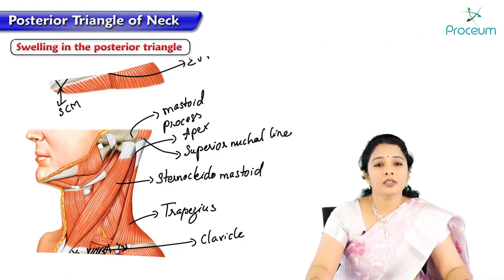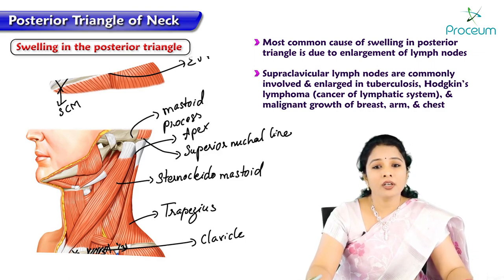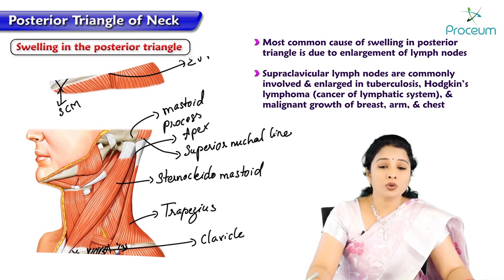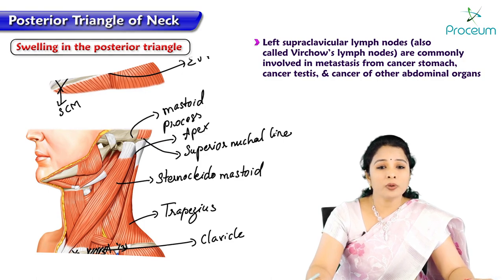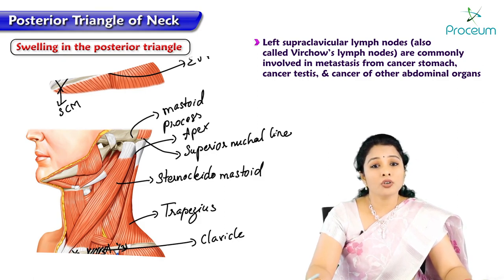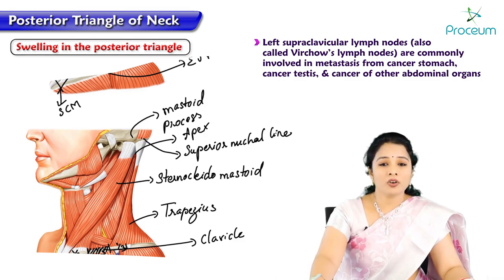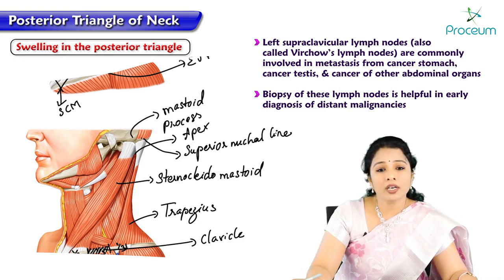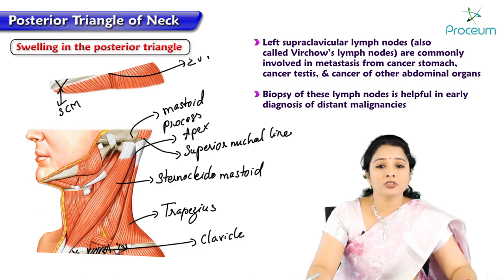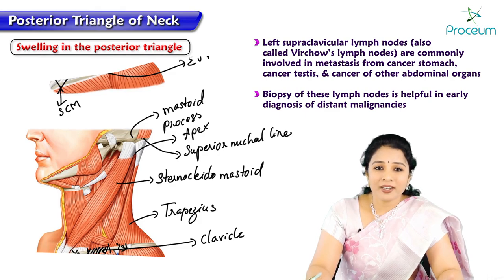The most common cause of swelling in the posterior triangle is enlargement of lymph nodes. The supraclavicular lymph nodes are commonly involved in tuberculosis, Hodgkin's lymphoma, and malignant growth of the breast, arm, and chest. The left supraclavicular lymph nodes are called Virchow's lymph nodes, commonly involved in metastasis from cancer of the stomach, testes, and other abdominal organs. Biopsy of these lymph nodes aids in early diagnosis of distant malignancies. With this we conclude the posterior triangle of the neck.